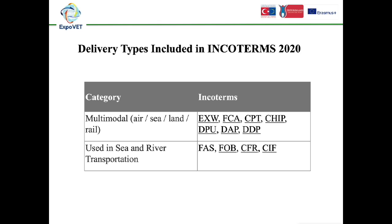In Incoterms 2020 Basic Classifications, previous versions distinguished delivery types starting with letters E, F, C, and D, classifying maritime shipments separately from multimodal transportation. In Incoterms 2020, maritime shipments consist of FAS, FOB, CFR, and CIF as one class, while other delivery methods — EXW, FCA, CPT, CIP, DAP, DPU, and DDP — are classified as multimodal: air, sea, land, and rail.